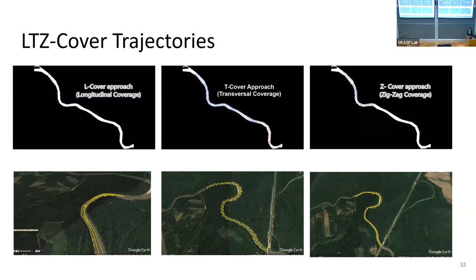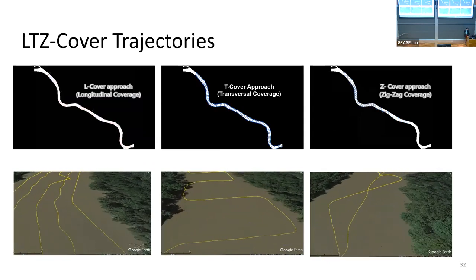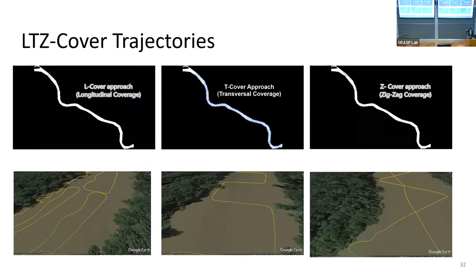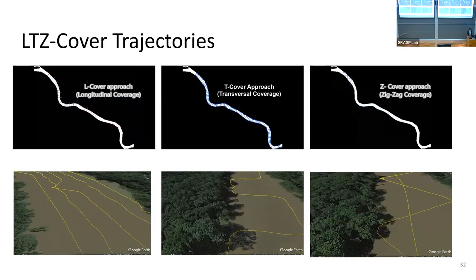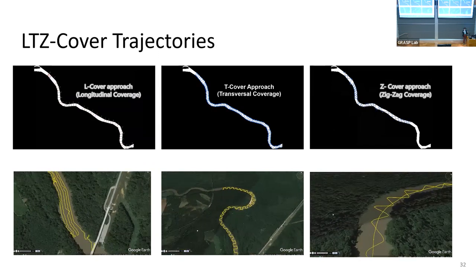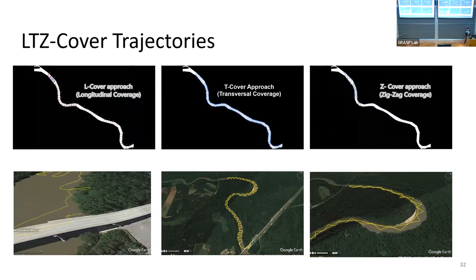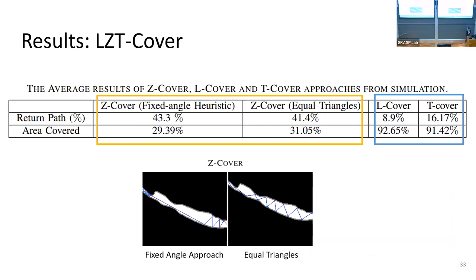Here you can see the execution of different patterns — longitudinal, transversal, and zig-zag — in simulation on the top, and on the bottom the projection of GPS coordinates from the actual experiments. Note that the trajectories generated were fairly straight lines, but in execution they are very wobbly — we'll see how to handle this later. The zig-zag method is a partial coverage method so we compared it to the fixed-angle heuristic humans were using; qualitatively we see more uniform coverage.